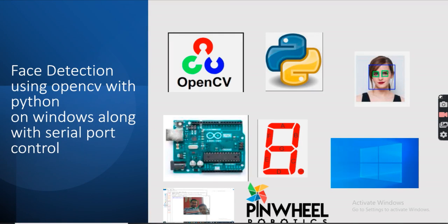Hello friends, today we are going to learn how to use OpenCV to detect a face and then we will use Python code to connect to our Arduino using serial code and display the number of faces being detected on the frame. So let's begin with installing OpenCV in Python on a Windows development environment and then we will see how to connect Arduino with Python serial code control.